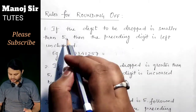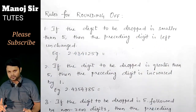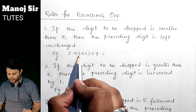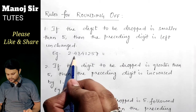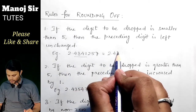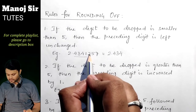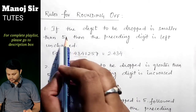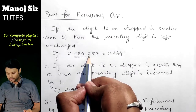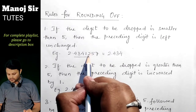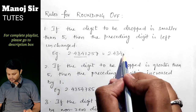The first rule says that if the digit to be dropped is smaller than 5, then the preceding digit is left unchanged. For example, take 2.4341257 and suppose you want to find up to 4 decimal places. We look at the fifth digit, which is 2. Since 2 is less than 5, the preceding digit — that fourth decimal place — is left unchanged.